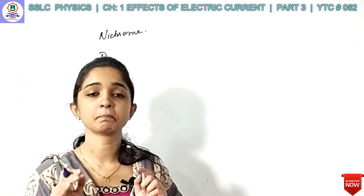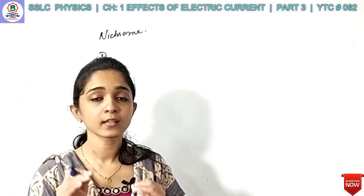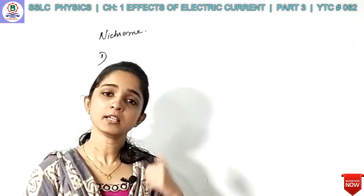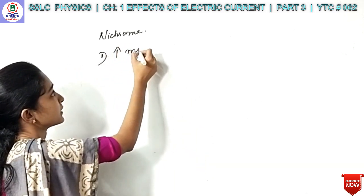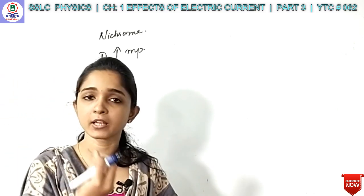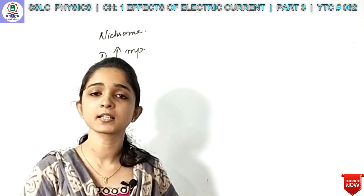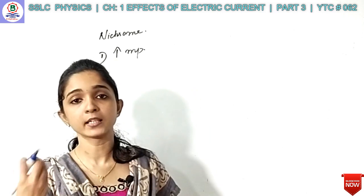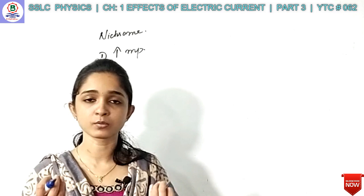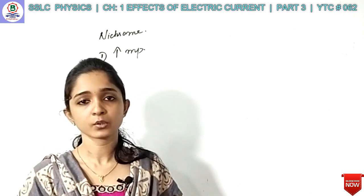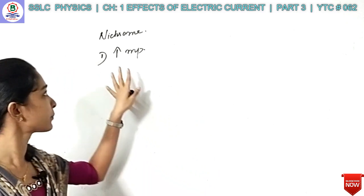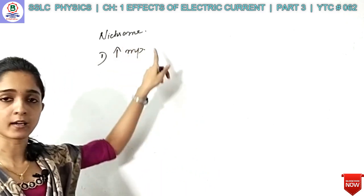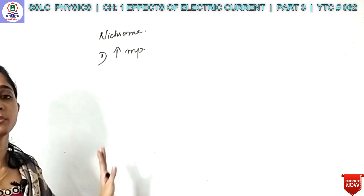Nichrome has a high melting point. There is a high melting point. That's why we use Nichrome — because we have to keep the heating coil here. If we pass electricity through it, we need the heating coil to remain stable. The melting point must be high. Nichrome has a high melting point. That's why we use Nichrome.